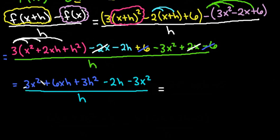The only thing that cancels out now is my 3x squared. And if you notice, everything else is left with an h in it.